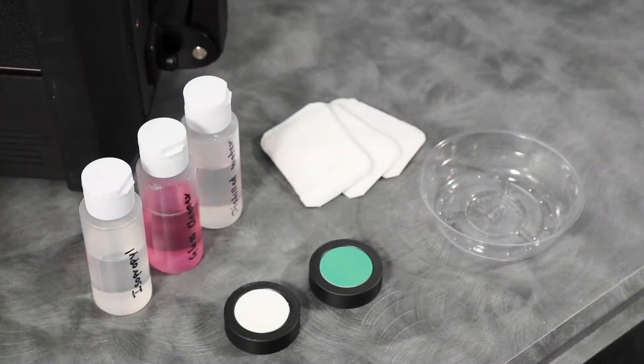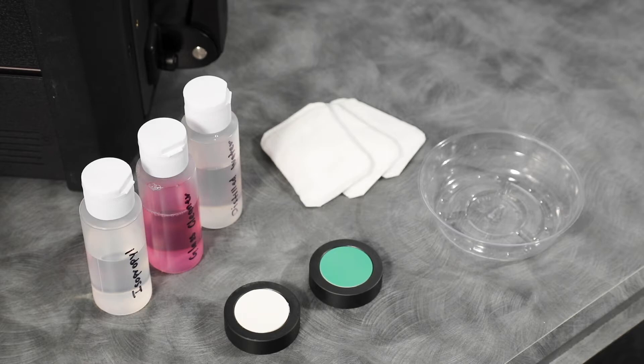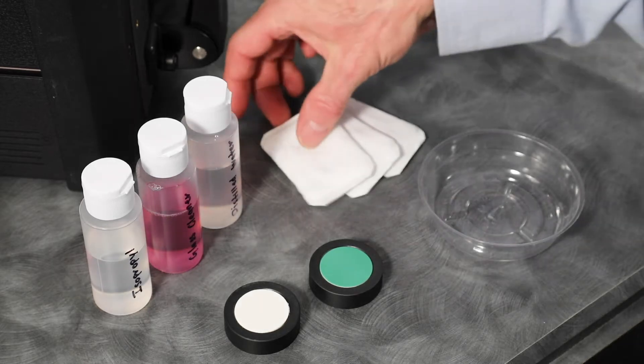To clean your green and white calibration tiles, you'll need the following: isopropyl alcohol, glass cleaner, lint-free wipes, and distilled water.